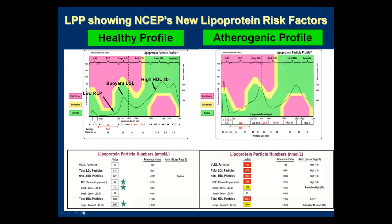An atherogenic profile looks quite different. On the far left, VLDL and RLP are elevated — in the yellow. The LDL peak is almost 50% small, a very dense profile. The HDL2b is low, in the borderline range — showing up both in the graph and in the numbers below.